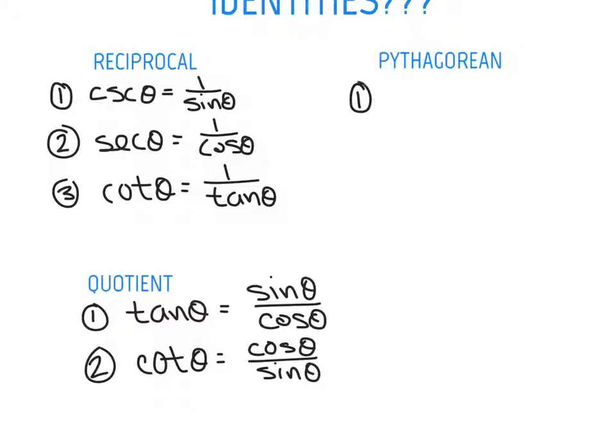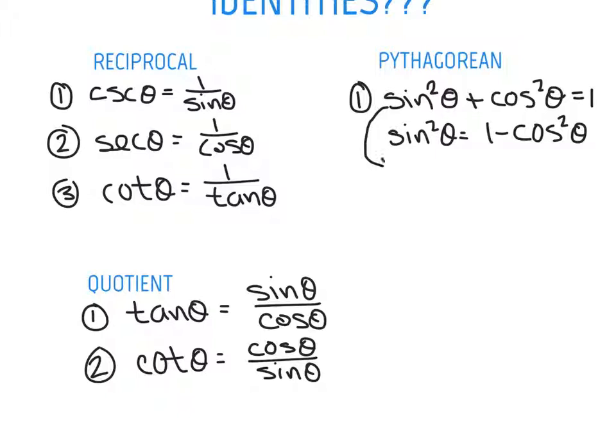Pythagorean identities. The first one, we call the godfather, because he's so special here and so popular. Sine squared of theta plus cosine squared of theta equals 1. Now, what you're going to see in class tomorrow is a whole bunch of manipulations of that equation where they're going to move certain terms from one side to the other. So I could say sine squared of theta is equivalent to 1 minus cosine squared of theta just by subtracting cosine squared from both sides.